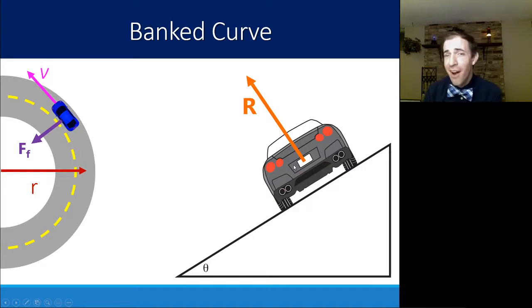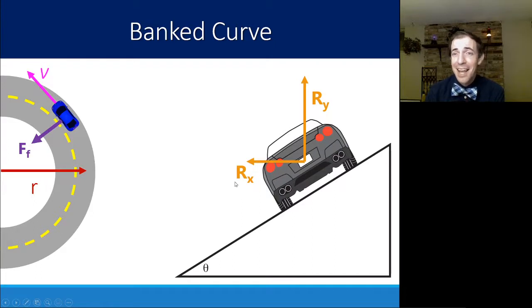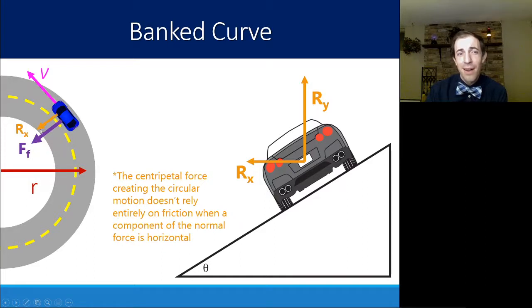But now we have a car on an angle. So if that's the case, we know that R is going to be perpendicular to the surface of the angle, which means that some of R is going vertically, we can say Ry, the y component, and some of R is going horizontally, Rx. That horizontal force is going to help us move towards the center of the circle. The overall force towards the center doesn't actually change from what we did before if we're moving at the same speed. So now, instead of all of that force needing to come from F, the force of friction, some of that force can come from R, which means that the force of friction can be smaller.